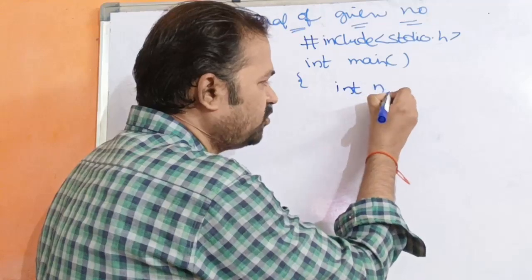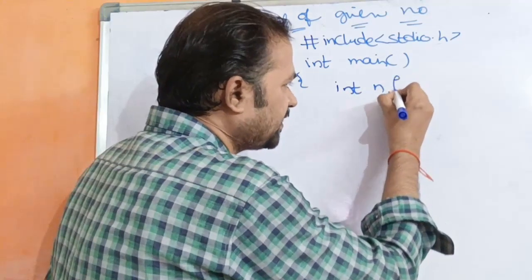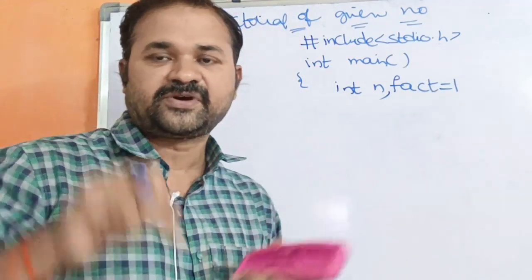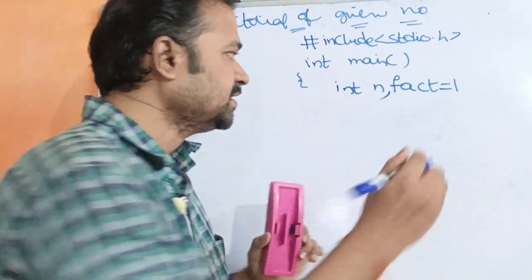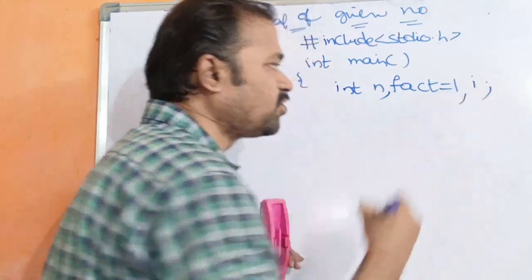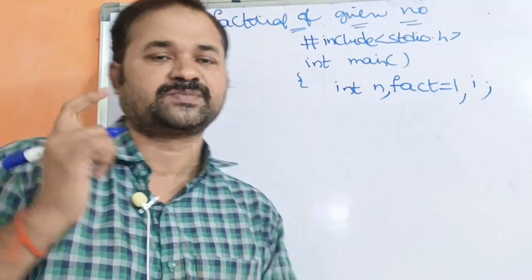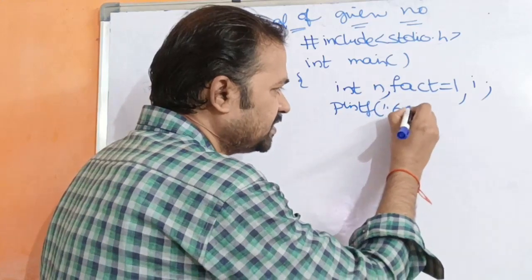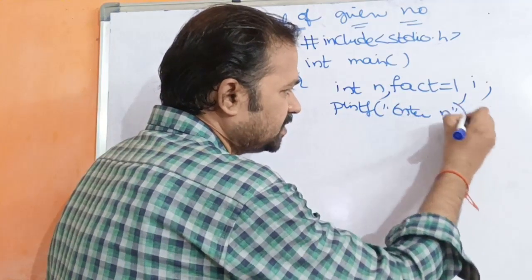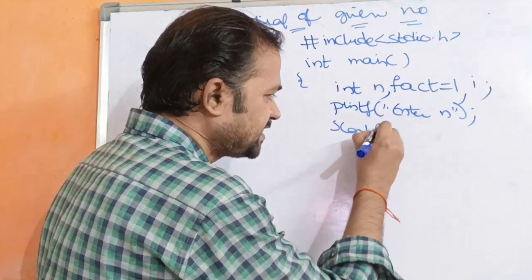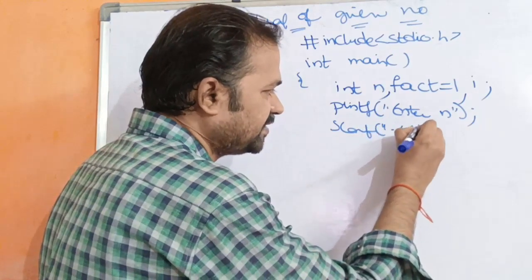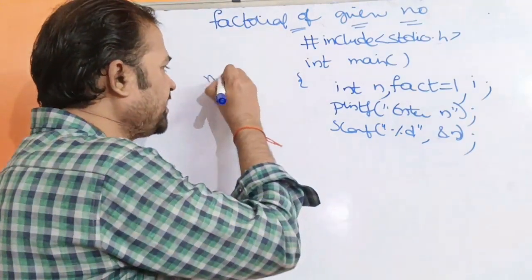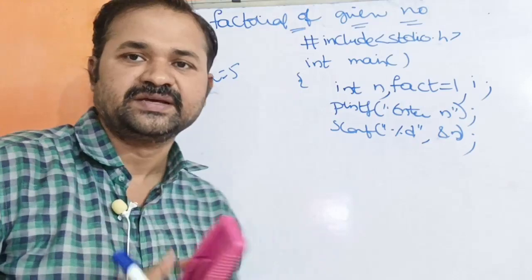Variable declare cheyali - n for input. Tharavatha fact variable declare cheyali, initial value of fact is 1, because 1 nunchi manu multiplication start cheyali. Tharavatha for loop lo iteration kosam i variable declare cheyali. Tharavatha printf statement - 'enter n' - tharavatha scanf with percentage d and ampersand n to read the input.